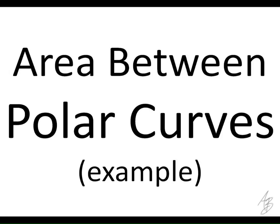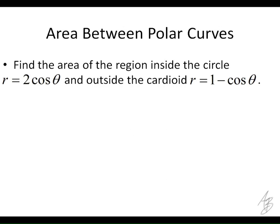In this example, what we're going to try to do is find the area between two polar curves. We've got two polar functions: R equals 2 cosine of theta and R equals 1 minus cosine of theta. We want to find the area inside of the circle, which is the 2 cosine of theta one, and outside of the cardioid, which is the 1 minus cosine of theta.